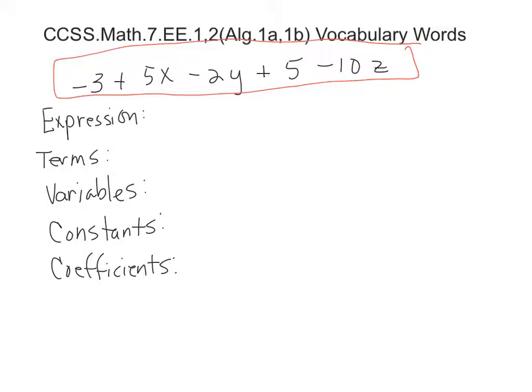It has at least one variable. In fact, it has three variables, and it has at least one operation. In fact, it has one, two, three, four, five operations in there. So it's subtracting and adding, subtracting and adding and subtracting. So it qualifies as an expression, so you need to identify it. It's that whole thing.